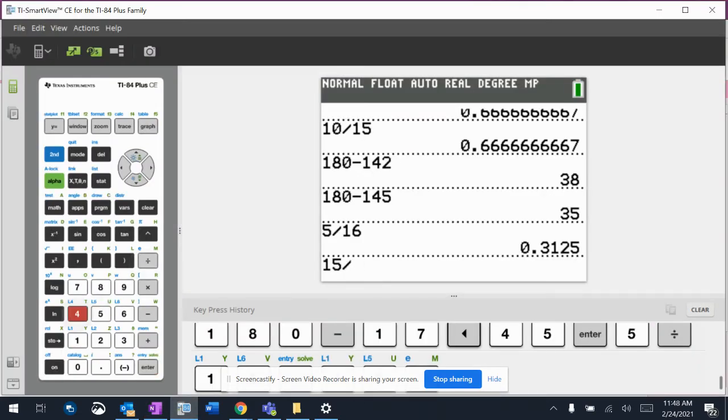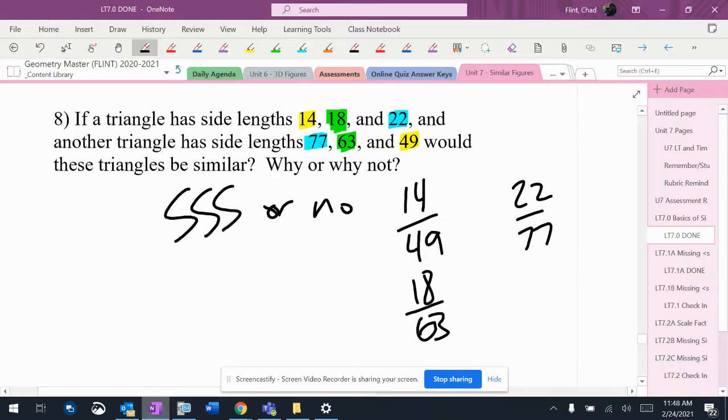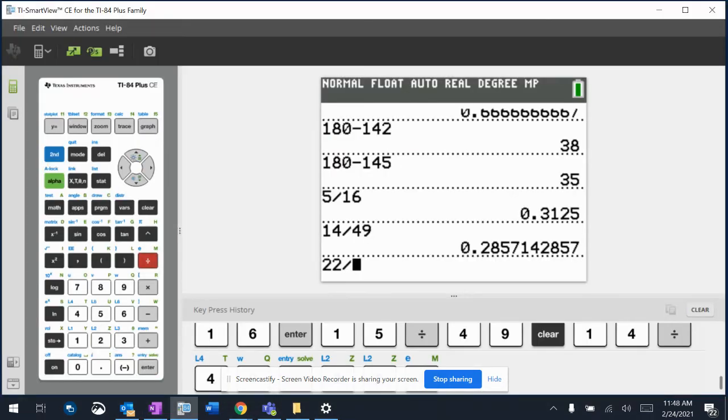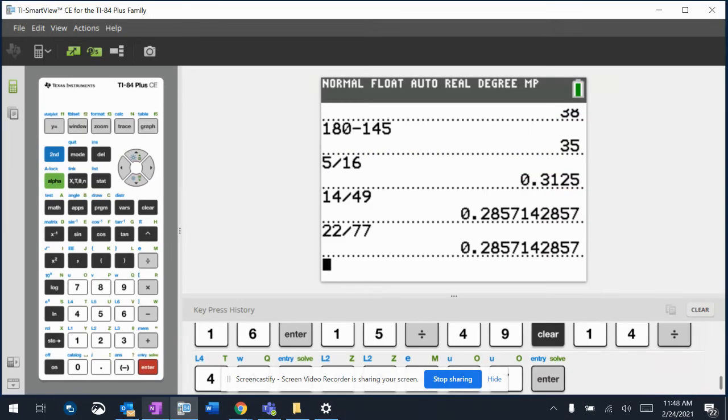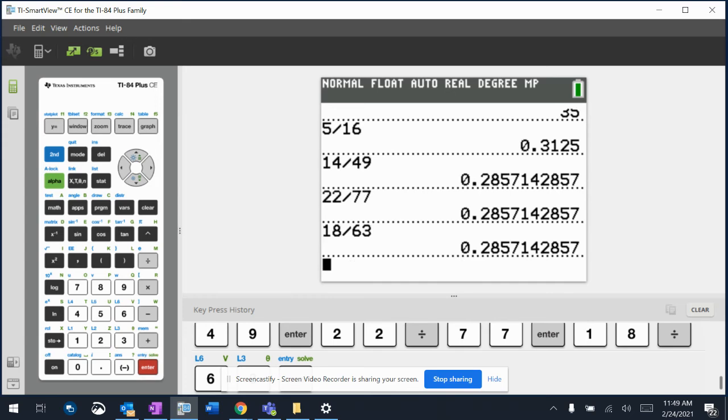So 14 divided by 49, 22 divided by 77, and 18 divided by 63 - those are all 0.285. We'll get some more stuff.